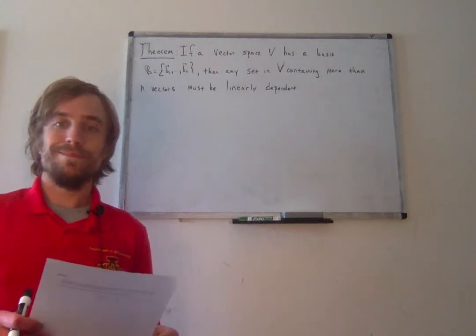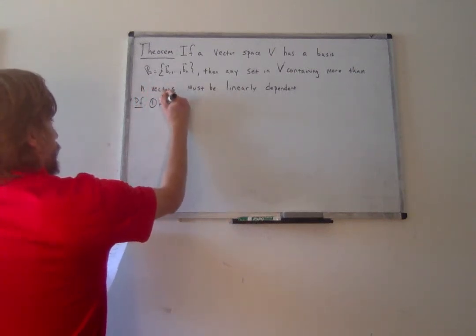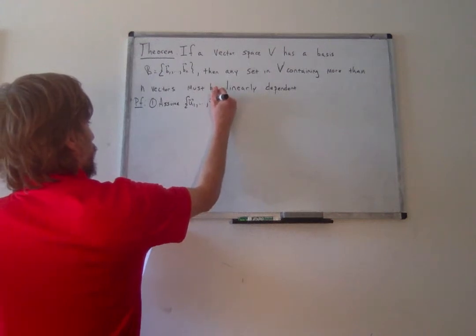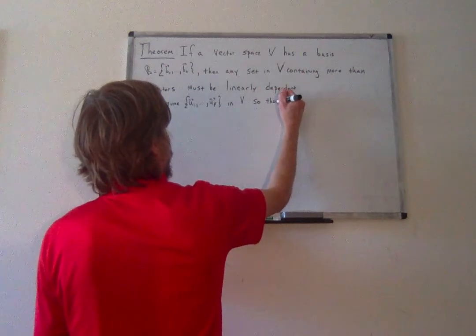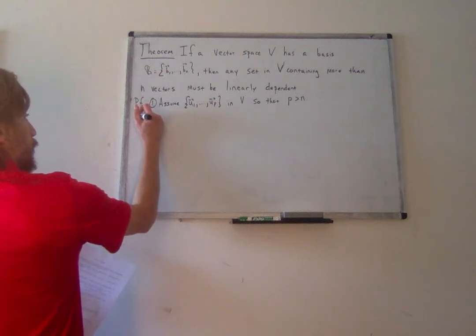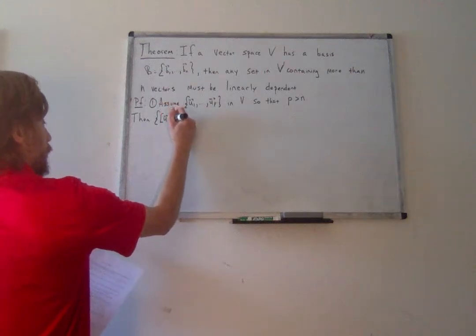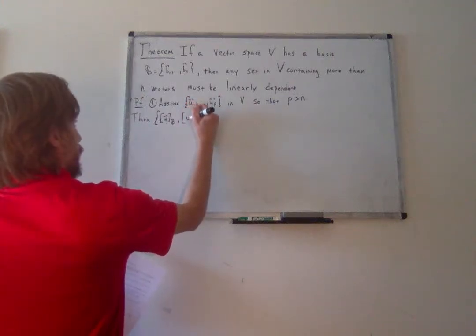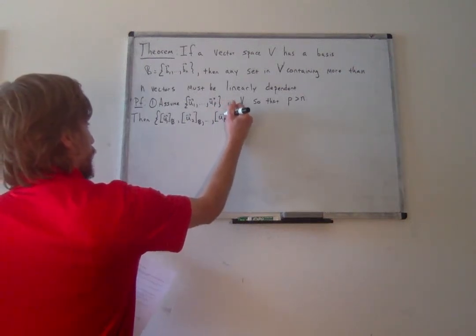Welcome back. To prove this, we're going to take some set of vectors u1 through uP in V, and we're going to assume that we actually have more than n vectors — so P is bigger than n. This means if I look at the set of B-coordinate representations of each of these vectors — u1 sub B, u2 sub B, all the way through uP sub B — well, what is this set?